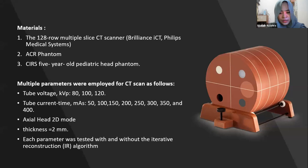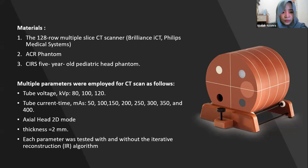The first material is a 128-slice CT scanner. The second is a Catphan phantom, and the third is a five-year-old pediatric head phantom. The CT scan parameters applied are: tube voltage (kVp) at 80, 100, and 120; tube current-time product (mAs) from 50 to 400. The CT scan is operated in axial head 2D mode with a slice thickness of 2 millimeters. For each parameter, tests will be conducted with and without the iterative reconstruction (IR) algorithm.